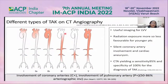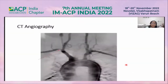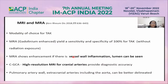On CT angiography, we can classify findings as type 1 through type 5 depending on which part of the aorta is involved. Coronary artery involvement is denoted C+ and pulmonary artery involvement as P+. Radiation exposure is higher, so CT angiography is less favorable for younger patients. We can assess coronary artery involvement and cardiac aneurysms; specificity is 100%.